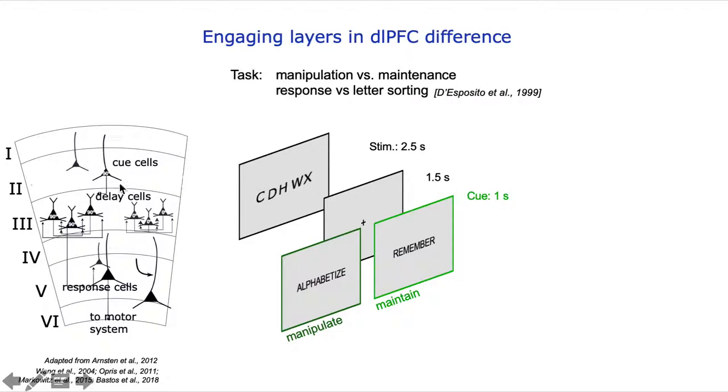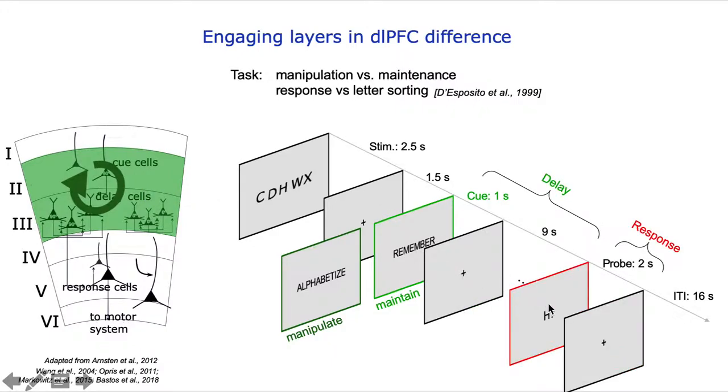Based on the hypothesis of the microcircuitry, this alphabetization epoch of the task really modulates the superficial layers only. A short while later, participants are asked about the location of randomly selected letters in the strings, and they need to do a response which engages the deeper output layers.